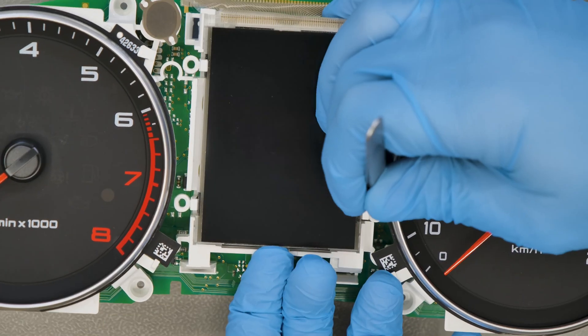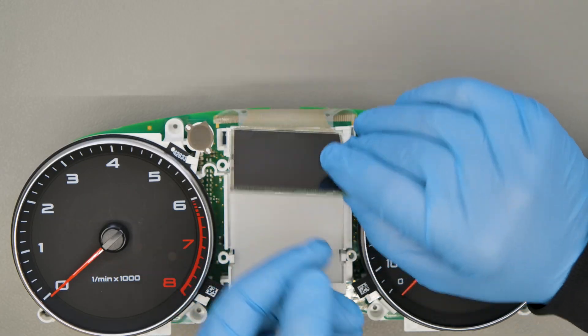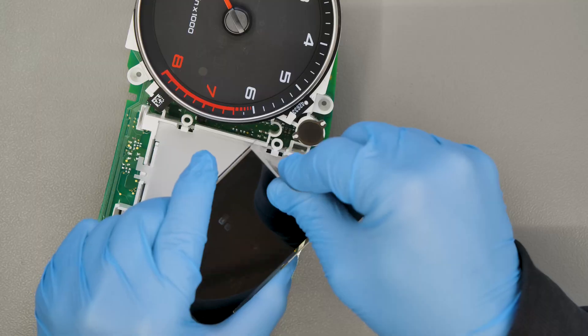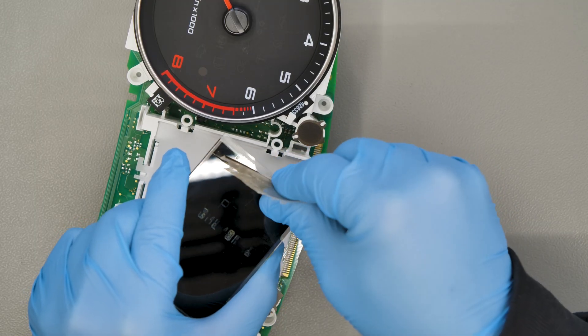Undo the display as shown. Gently lift the display and remove the flat from the PCB manually. Remove it from the display as well.